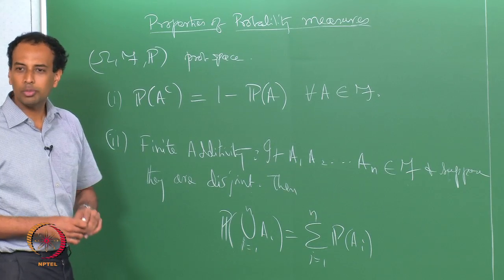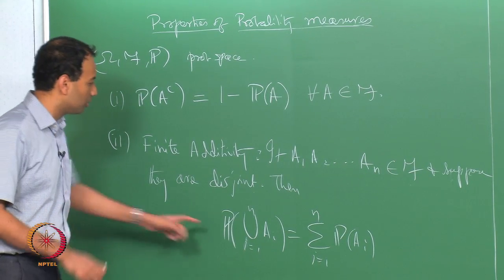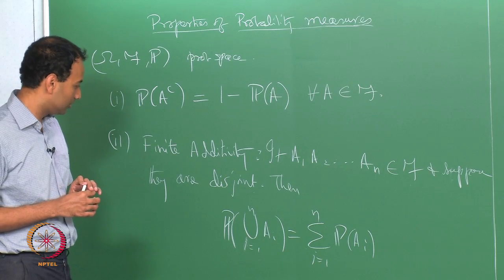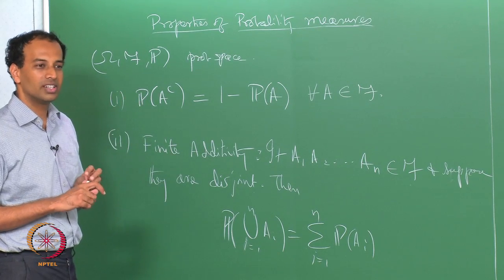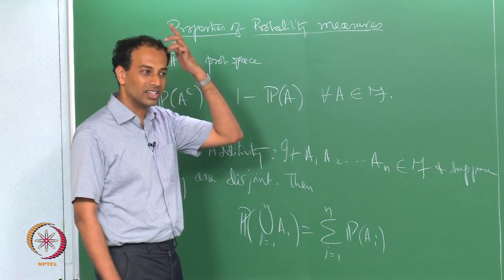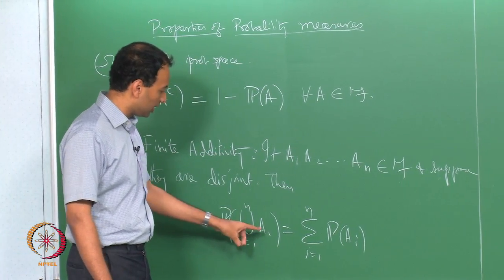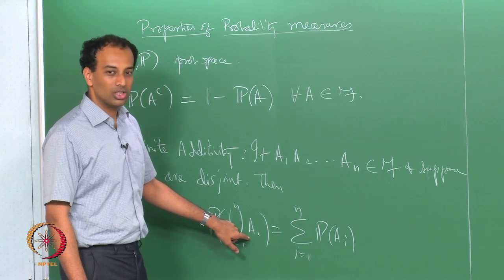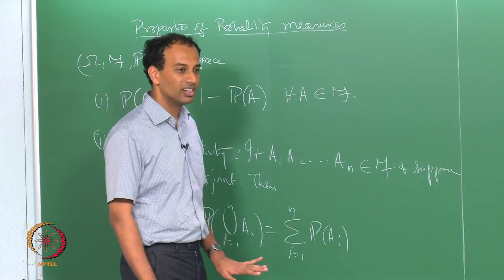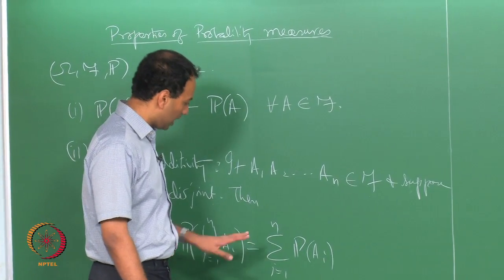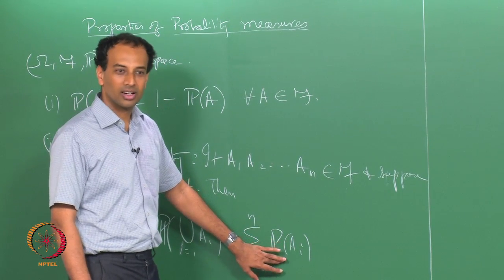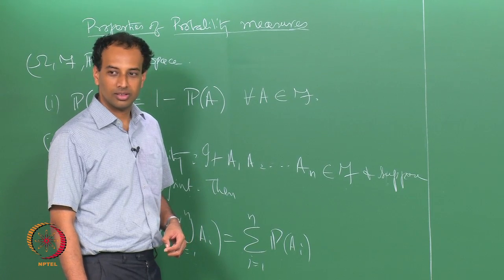How do you prove finite additivity from countable additivity? After A_n, you choose all those events as null sets. Then the countably infinite union equals the finite union because A_{n+1}, A_{n+2}, etc. are all null sets. On the right-hand side you have the sum to infinity, but after the first n terms you have the probability of the null set, which is 0. You have to write this out carefully as a limit — you should not say 'zero times infinity' — and prove it rigorously.